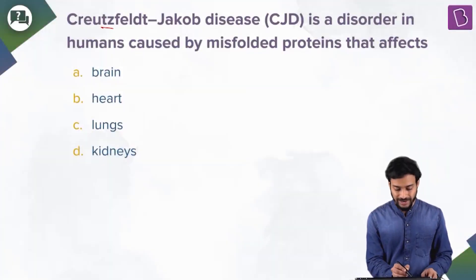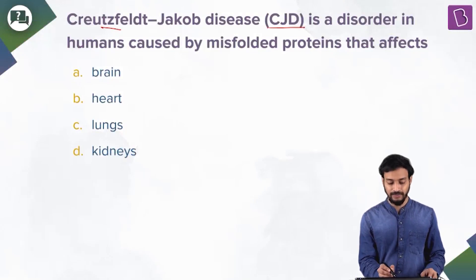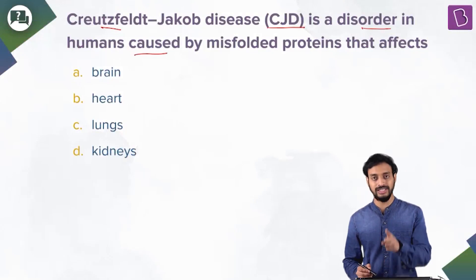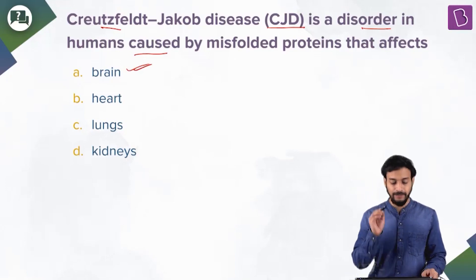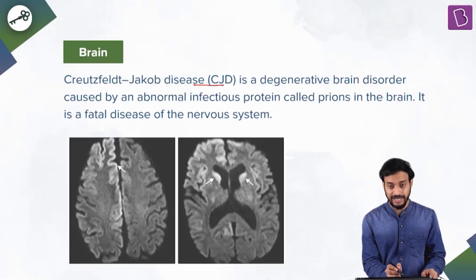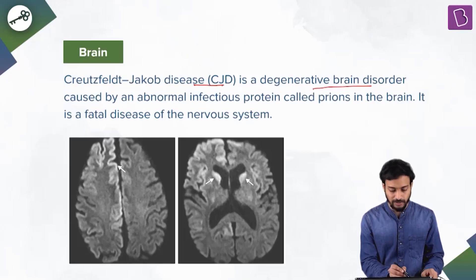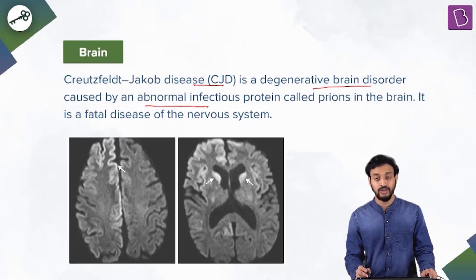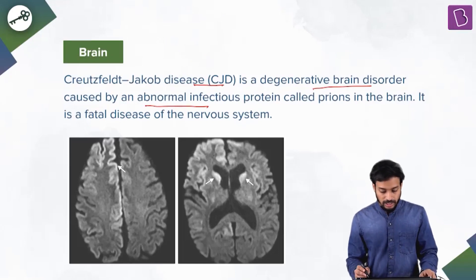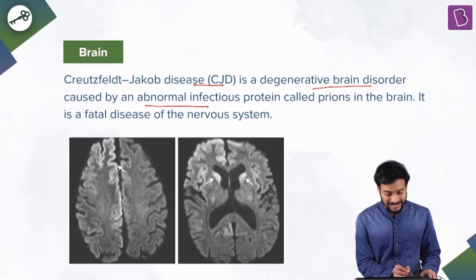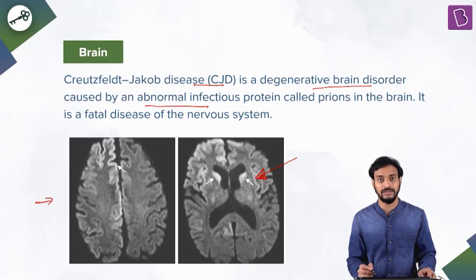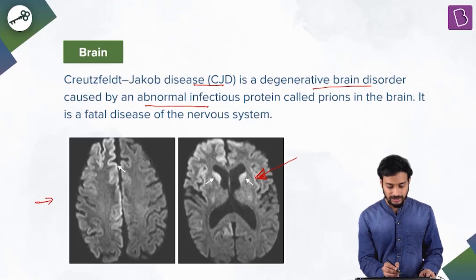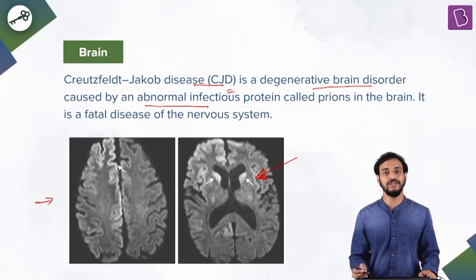Creutzfeldt-Jakob disease, CJD, is a disorder in humans caused by misfolded proteins called prions that affect the brain. CJD is a degenerative brain disorder caused by these abnormal infectious proteins, causing brain cells to degenerate. Comparing the MRI of a normal brain versus an infected brain shows clear structural differences. Brain is the correct answer — CJD is caused by prions affecting the brain.